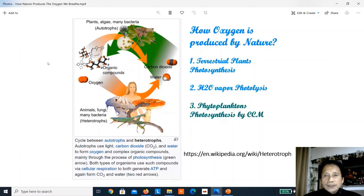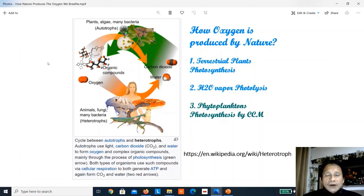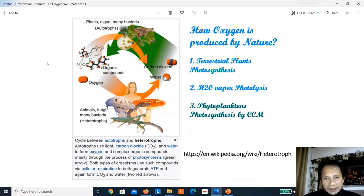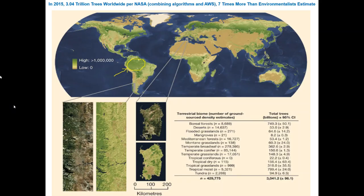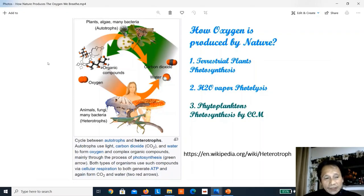On the origin of oxygen and how it is produced by nature, many thought that most of our oxygen comes from terrestrial plants or rainforests. In fact, the Amazon rainforest is tagged as the lungs of the earth because it supposedly supplies 20% of oxygen. But that's not correct. The terrestrial plants — all the rainforests, which as of 2015 numbered 3.04 trillion trees on earth — contribute only 28% of the oxygen needed by all breathing organisms.